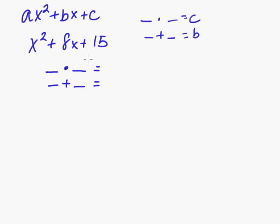So what times what equals 15 and what plus what equals 8. We need to look at the factors of 15 and figure out which ones will work. If you look at 15, you have 1 and 15 or 3 and 5. So 3 and 5 is going to work: 3 times 5 is 15 and 3 plus 5 is 8. So you just write it like this: (x + 3)(x + 5).